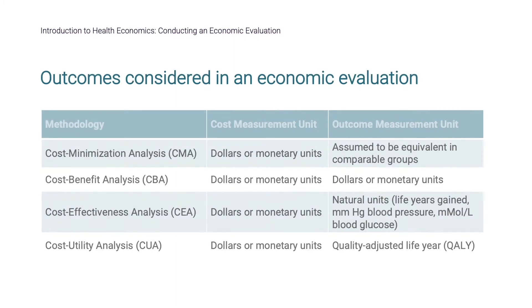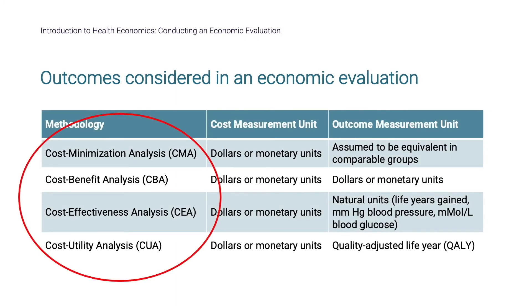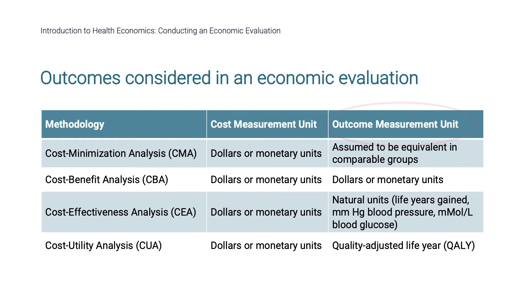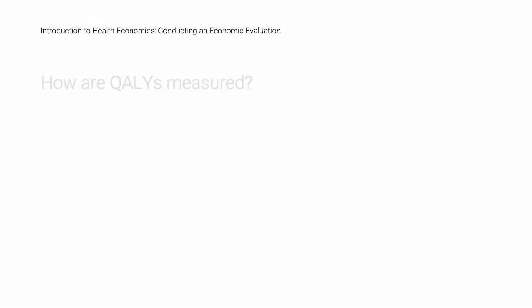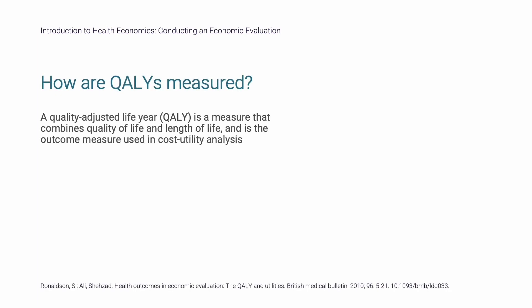In the past section, we defined the different types of economic evaluation based on what outcome measure is used. As quality adjusted life years, or QALYs, are a very commonly used outcome measure, we will focus now on QALY measurement. A quality adjusted life year, or QALY, is a measure that combines quality of life and length of life, and is the outcome measure used in cost-utility analysis, which is often the preferred method of health technology assessment agencies.